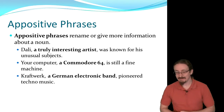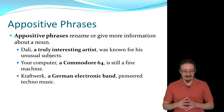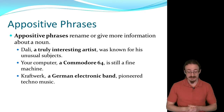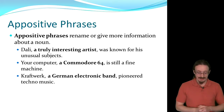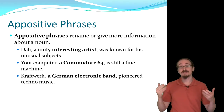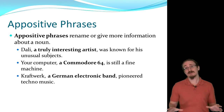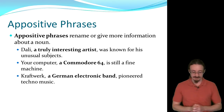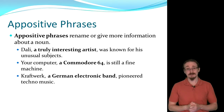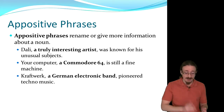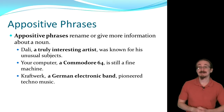Then we get into appositive phrases. These basically rename or restate a subject or object. For example, 'Dolly, a truly interesting artist, was known for his unusual subjects.' The appositive phrase interrupts the flow of the sentence by plugging in extra information. You could just say 'Dolly was known for his unusual subjects' and take it out completely. Or you could write two sentences: 'Dolly was a truly interesting artist. He was known for his unusual subjects.' But why do that when you can just make it an appositive phrase?